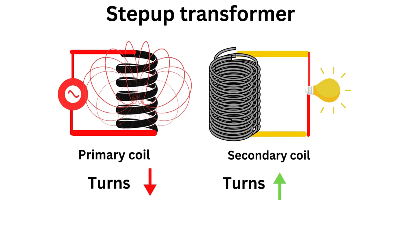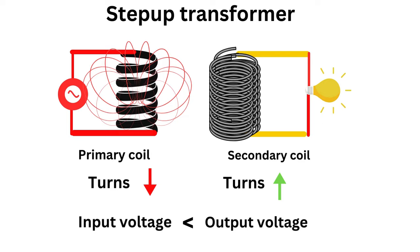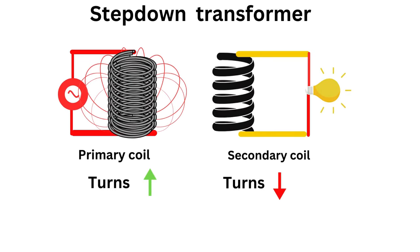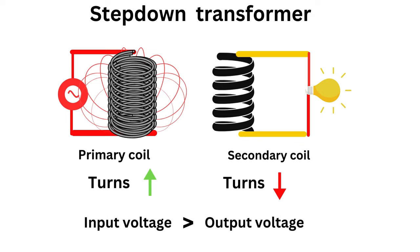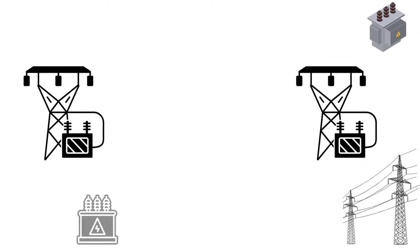We compute the turns ratio of input to output. For a Step Up transformer, the primary coil has fewer turns than the secondary coil. For a Step Down transformer, the primary coil has more turns than the secondary coil.